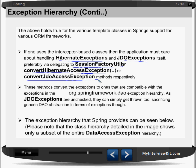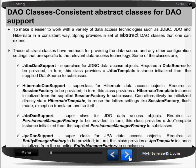These methods convert exceptions to ones compatible with the Spring framework's DAO exceptions hierarchy. Since JDBC exceptions are unchecked, they can simply be thrown, sacrificing generic DAO abstractions in terms of exceptions thrown. So the exception hierarchy that Spring provides is a very good set of exceptions that gets handled consistently.